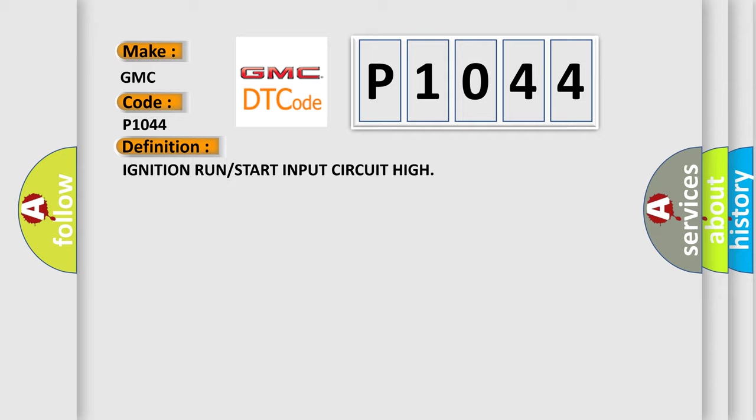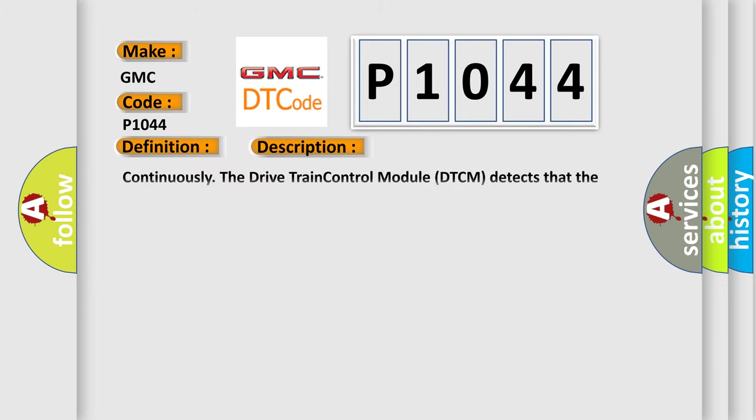And now this is a short description of this DTC code. Continuously, the drivetrain control module DTCM detects that the ignition switch circuit voltage is above 16.0 volts for more than 30 seconds.